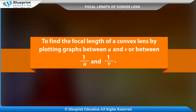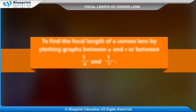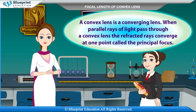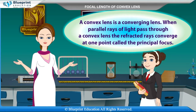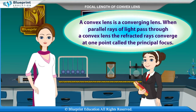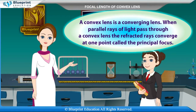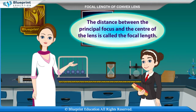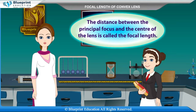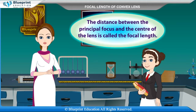The goal is to define the focal length of a convex lens by plotting graphs between U and V or between 1/U and 1/V. A convex lens is a converging lens. When parallel rays of light pass through a convex lens, the refracted rays converge at one point called the principal focus. The distance between the principal focus and the center of the lens is called the focal length.